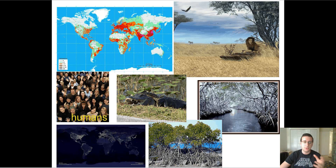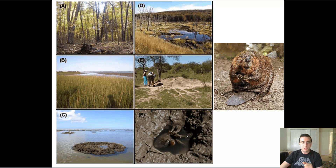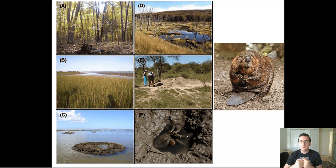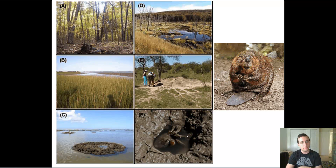Dominant species are species that have no competitors or basically control the ecosystem they live in — a very important biotic factor. Humans are a great example. Another example of very important biotic factors are ecosystem engineers, also called foundation species. For example, in some types of woodland ecosystems, the presence of certain trees will actually change the ecosystem — they block some of the sunlight, so the plants that live on the bottom can't live there anymore, changing the way the ecosystem looks.